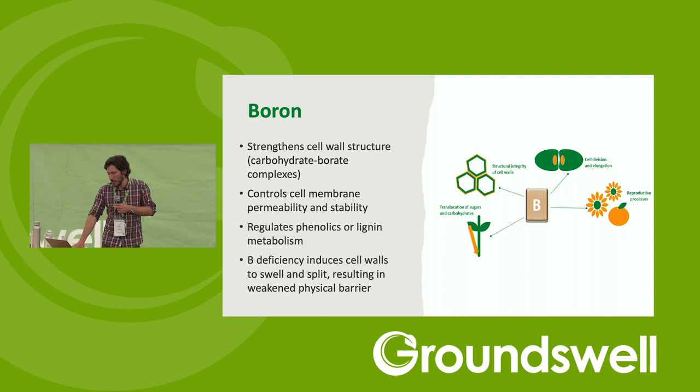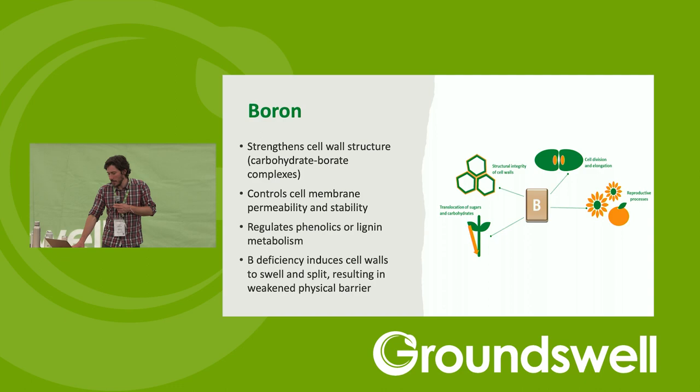Boron is mainly a structural element. It works tightly with calcium — they embed together to reinforce the cell walls. Boron and calcium are synergists; boron helps calcium enter the plant and become available, so they go hand in glove. The third partner in that trio is silicon.